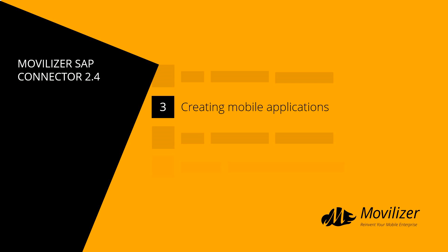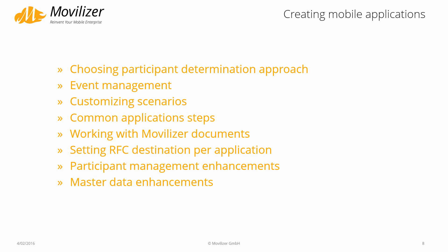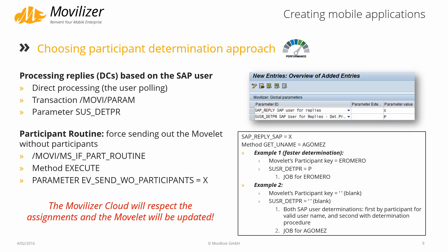In item 3 on our agenda, we now look at new features that support creating mobile applications. First, the participant determination approach was extended. Now you can determine the SAP user that should process movlet replies either using the participant key directly or using a determination procedure.